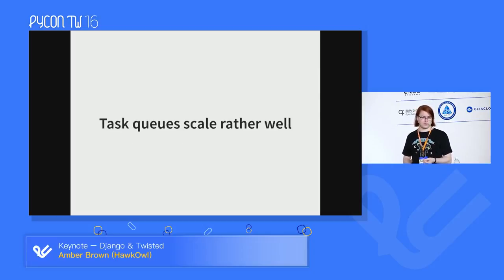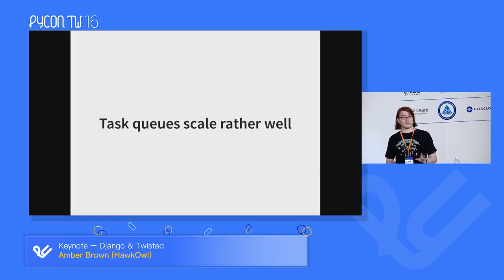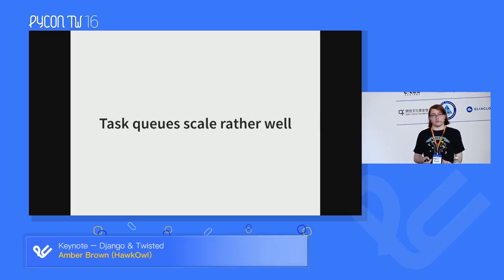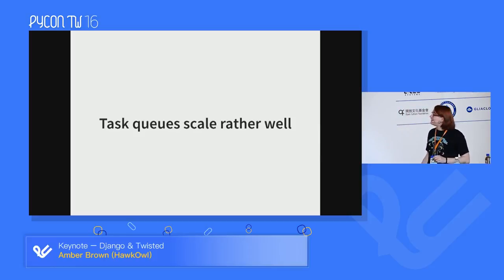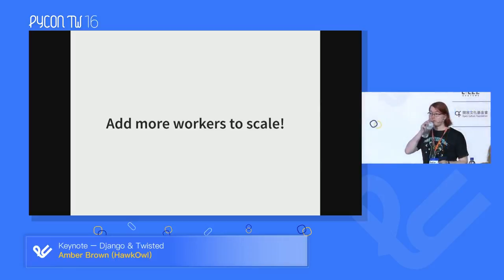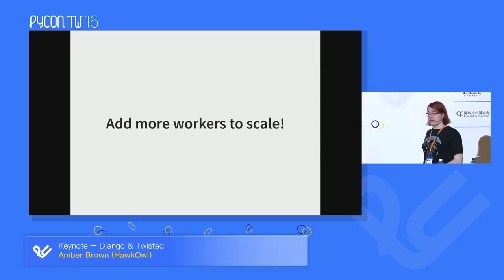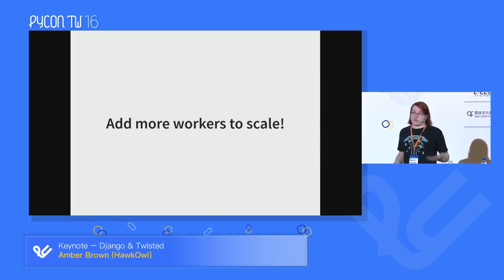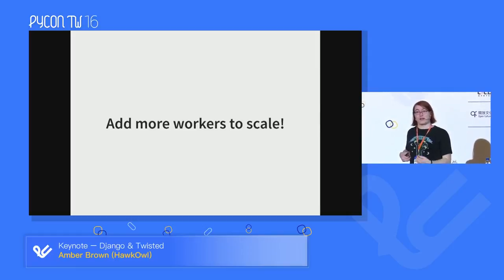These task queues scale rather well because they're generally optimized in C or other high-performance languages. You don't really have to care about how they scale because many just have sharding options built in — something you don't have to solve yourself, making deployment much easier. If you want to do more work per second, you just add more workers. Because everything scales horizontally, you can just add more workers and everything will just work, since the task queue and the web server both do very little work and won't be the bottlenecks.